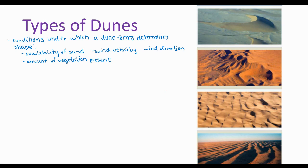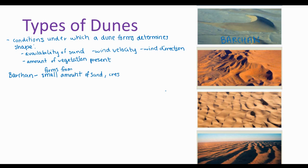Different types of dunes: The first dune is a Barchan dune — spelled B-A-R-C-H-A-N. The Barchan dune forms from a small amount of sand. They can reach pretty big sizes, like 30 meters. The crests of Barchan dunes point downwind.